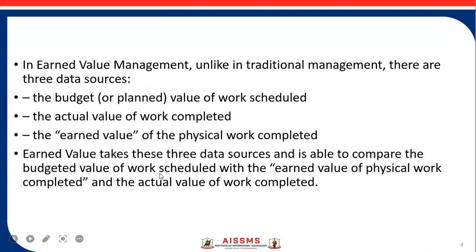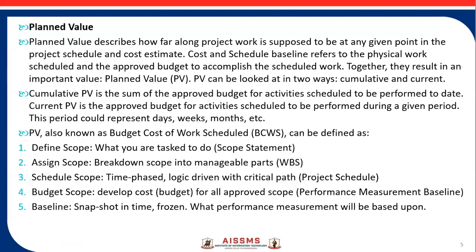The first one is planned value. Planned value basically describes how far along the project work is supposed to be at any given point in the project schedule and cost estimate. Cost and schedule baseline refers to the physical work scheduled and approved budget to accomplish the scheduled work. Together they result in an important value — the planned value. PV can be looked at in two ways: cumulative and current. Cumulative PV is the sum of approved budget for activities scheduled to be performed to date. Current PV is the approved budget for activities scheduled to be performed during a given period — days, weeks, months, or years. PV is also known as the budgeted cost of work scheduled.